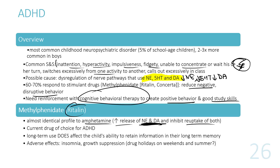Long-term use of Ritalin can affect a child's ability to retain information. Because of increased norepinephrine in the brain, it causes insomnia and suppresses appetite, which can lead to growth suppression. Some clinicians recommend drug holidays — on weekends or during summer breaks — to allow the child to regain appetite and resume normal height growth. Research shows that when the drugs are stopped, there is a rebound in the child's growth.